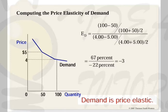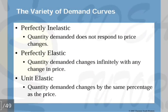If the elasticity is more than one, the demand is price elastic. Further categories include: perfectly inelastic demand, where quantity demanded does not respond to price changes at all; perfectly elastic demand, where quantity demanded changes infinitely with any change in price — no matter how small or large the price change, quantity demanded responds by a very large amount; and unit elastic demand, where quantity demanded changes by the same percentage as price, giving an elasticity equal to one.